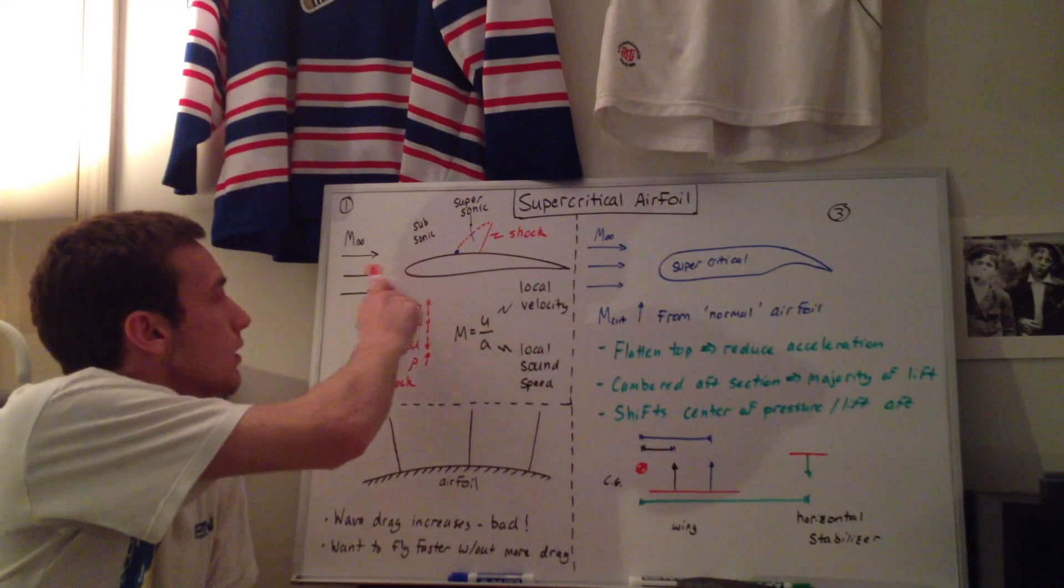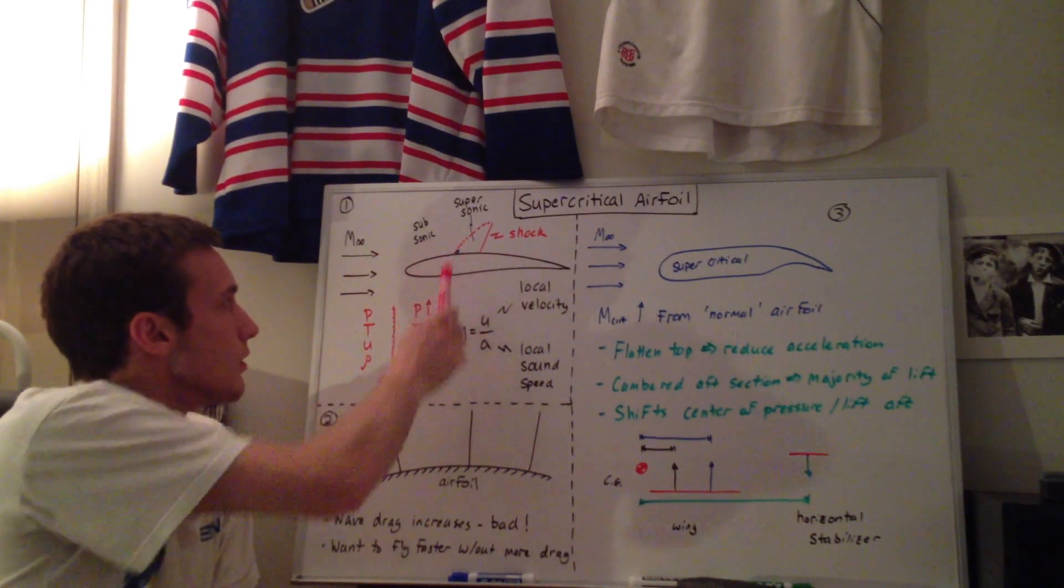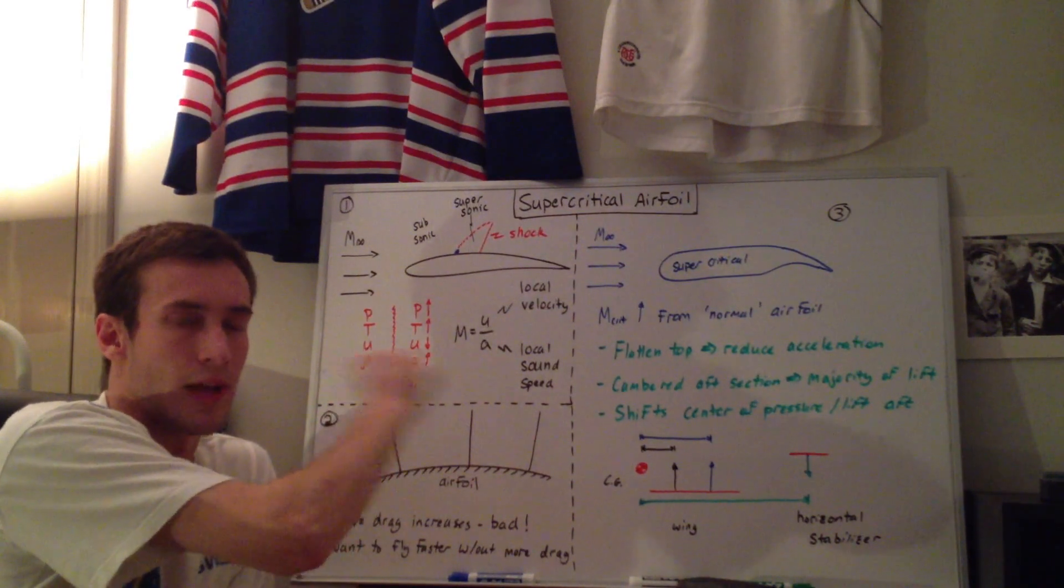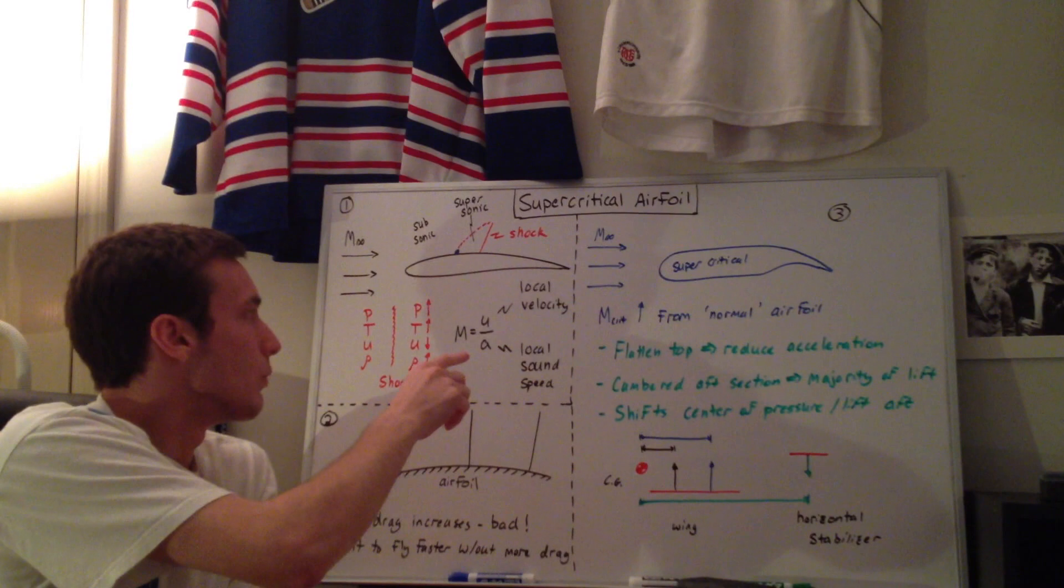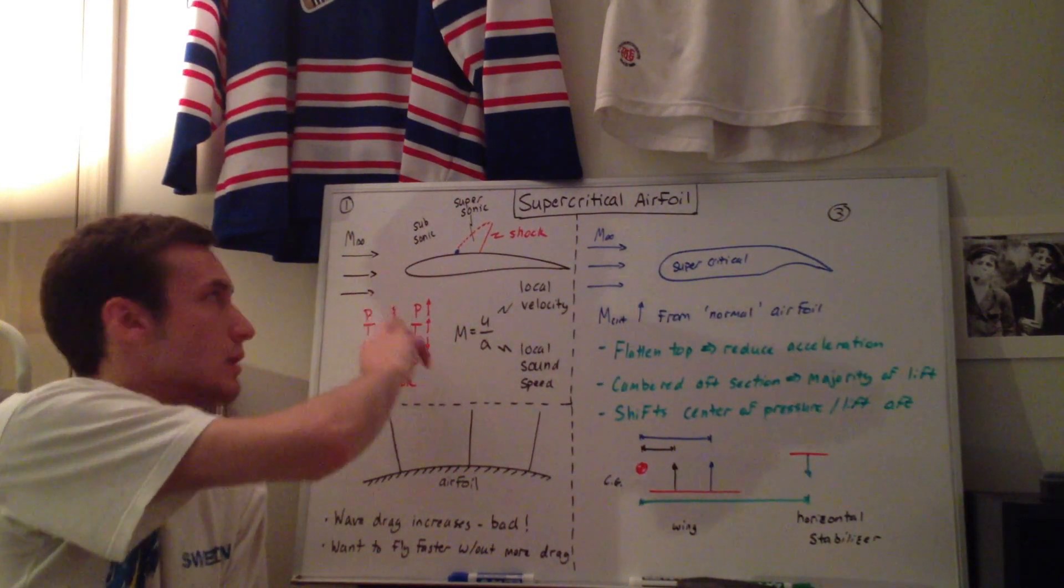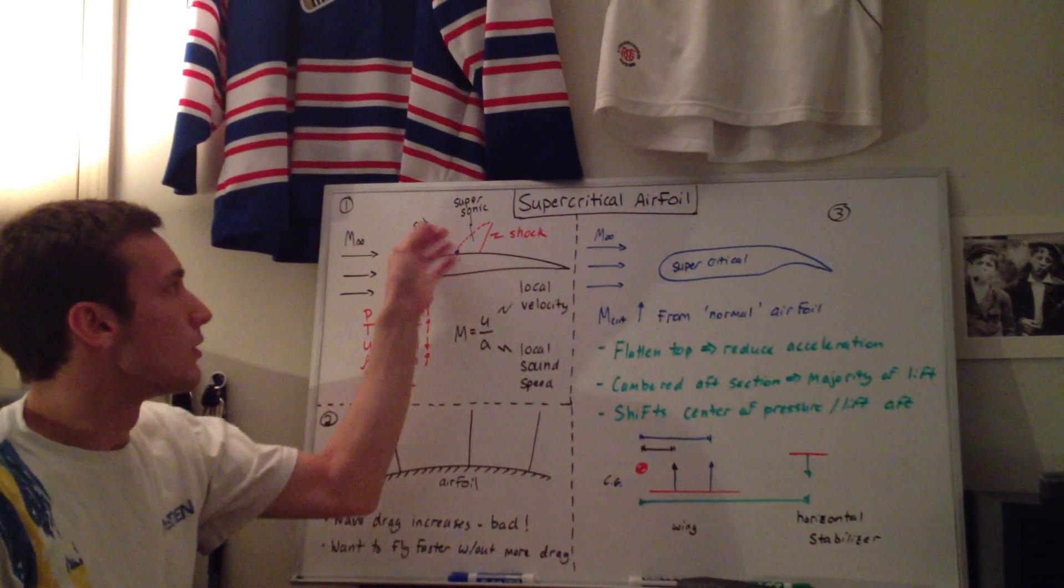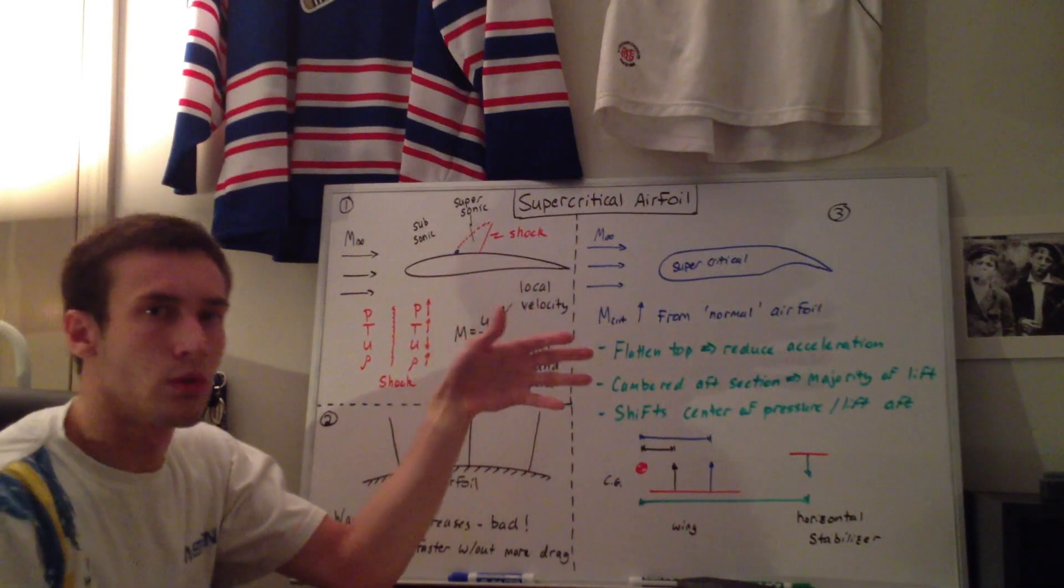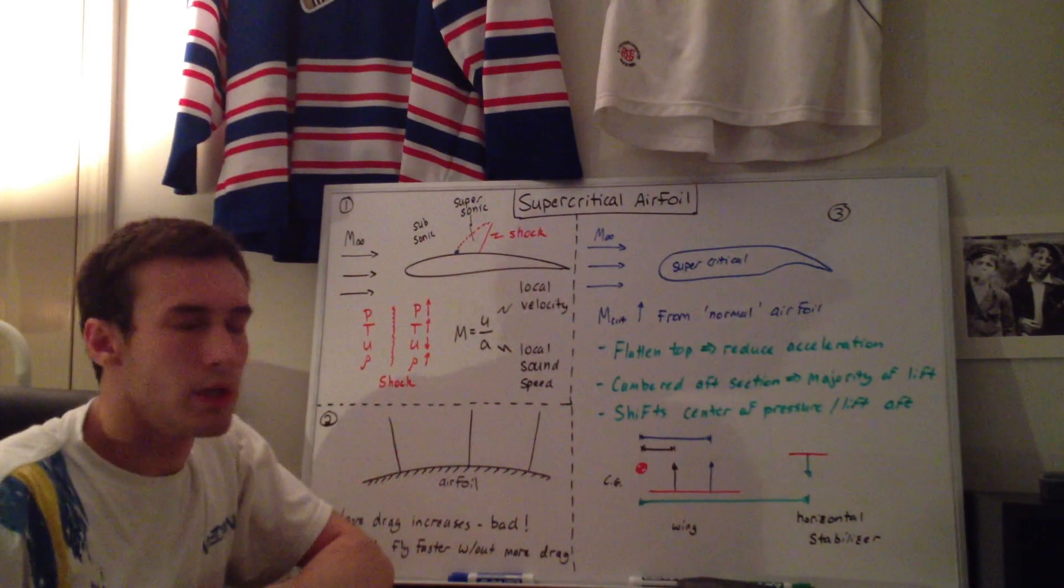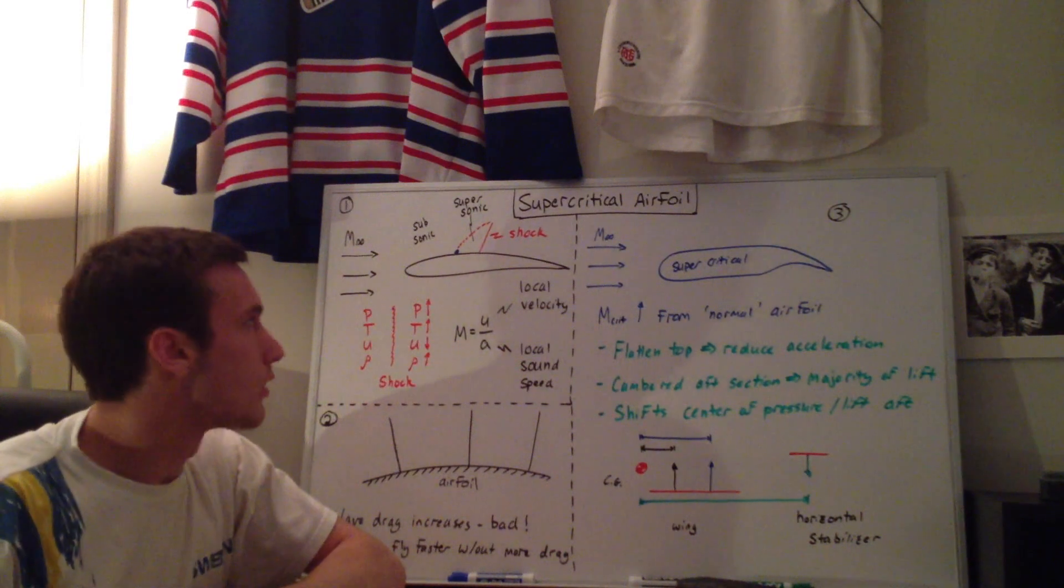So as the freestream Mach number increases, there's this blue point here, and that's the first point where the flow is fast enough where it's at Mach 1. And as you keep increasing the freestream speed or the freestream Mach number, you develop this region in here with the red where you have local supersonic flow, where the local Mach number is greater than 1. And then what happens is you develop a normal shock perpendicular to the surface, which brings the flow back down to subsonic speeds.